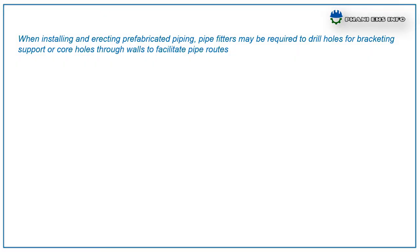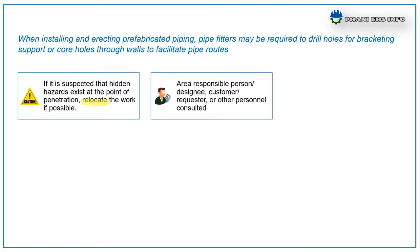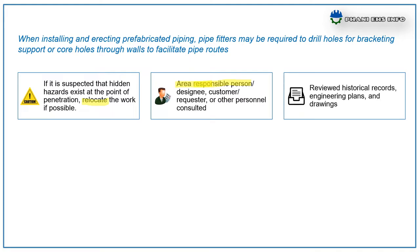First: erection of pipelines at building structures. When installing and erecting pre-fabricated pipes, fitters may be required to drill holes for bracketing supports or core holes through walls to facilitate the pipe routes. The following measures are to be taken. First, if it is suspected that hidden hazards exist at the point of penetration, relocate the work if possible. Second, the area responsible person, designee, customer, requester, or other personnel consultants should review the historical records, engineering plans and drawings, and visually inspect the proposed location of penetration.